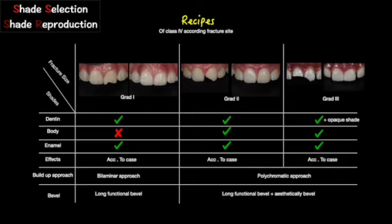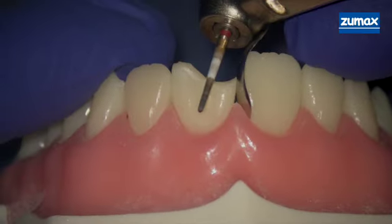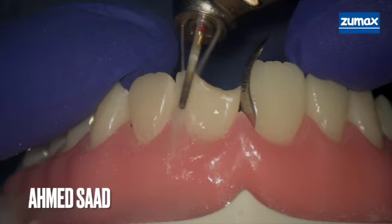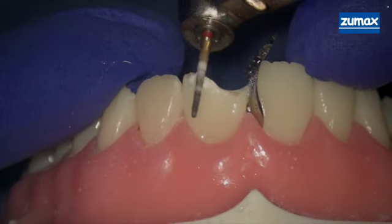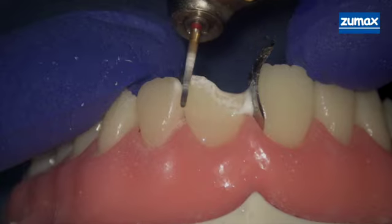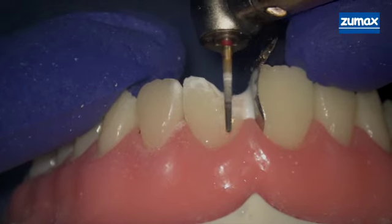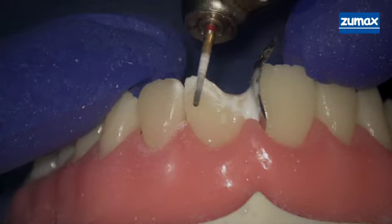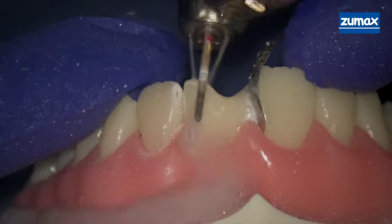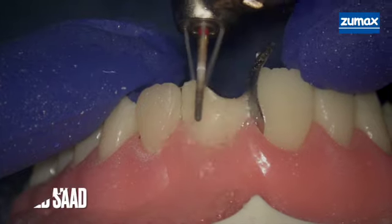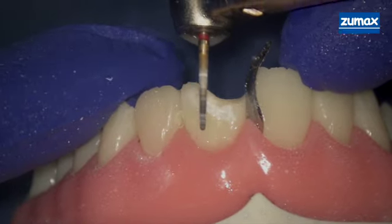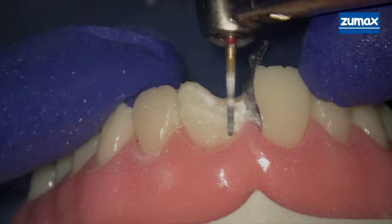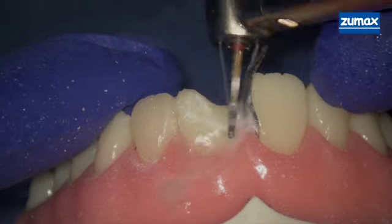According to my classification, my bevel design will be functional and aesthetic. I will start using a red-coded finishing bur at 45 degrees, just 1 to 2 millimeters from the fracture side to the labial, and on the labial side to remove only 0.5 to 1 millimeter thickness maximum. This is our functional bevel. Don't forget to use a matrix guard to prevent adjacent tooth injury, and don't forget to use coolant during preparation to avoid heat generation.